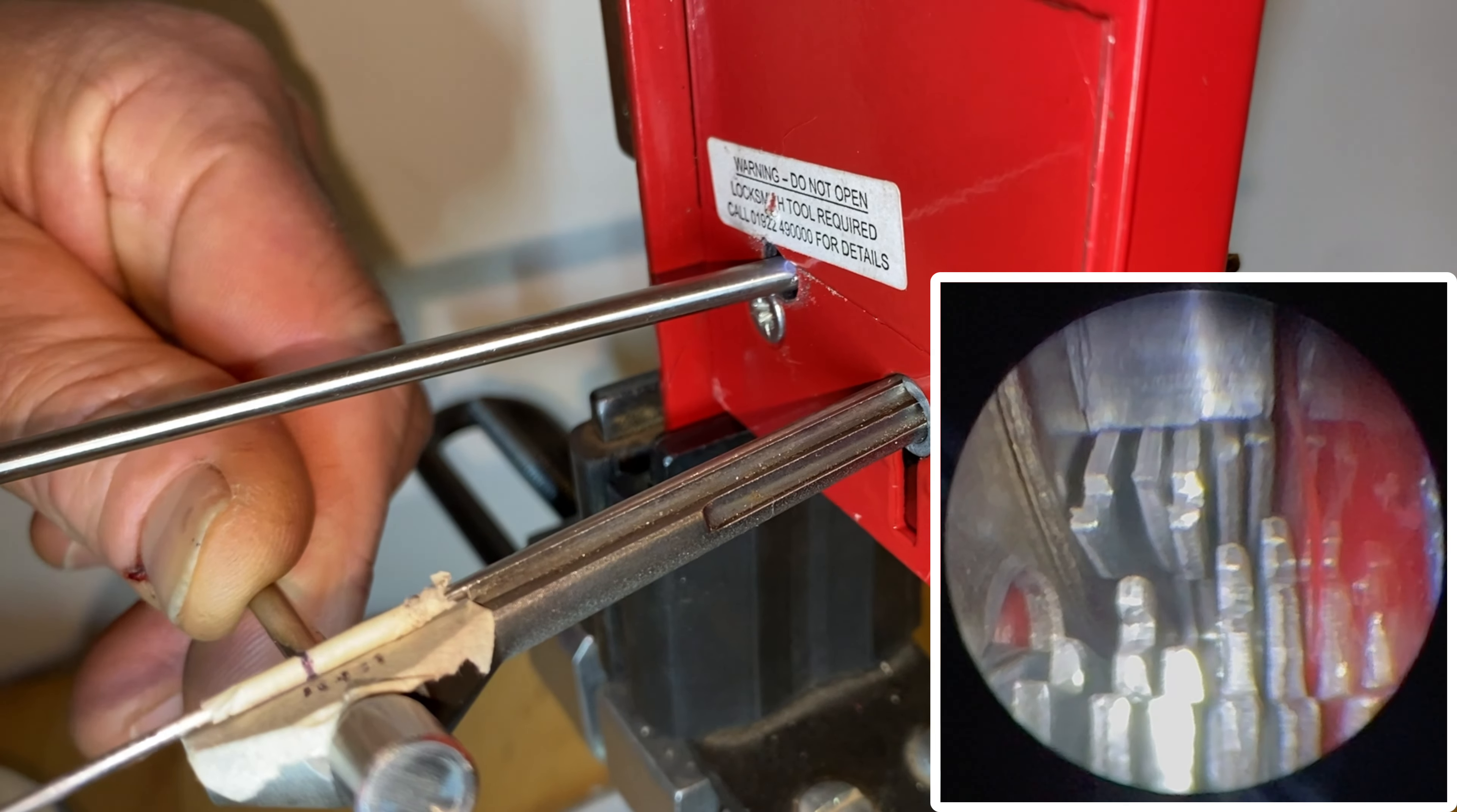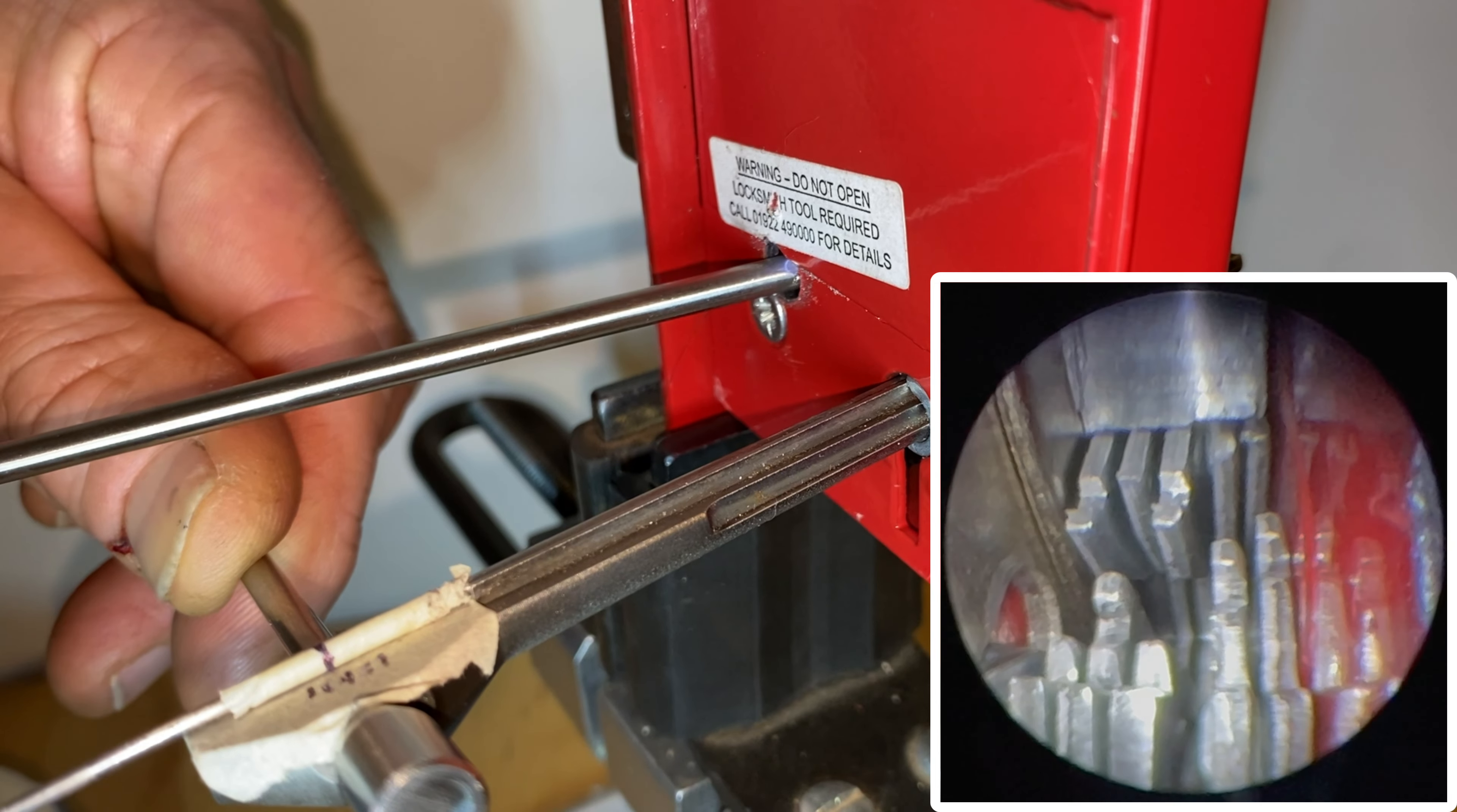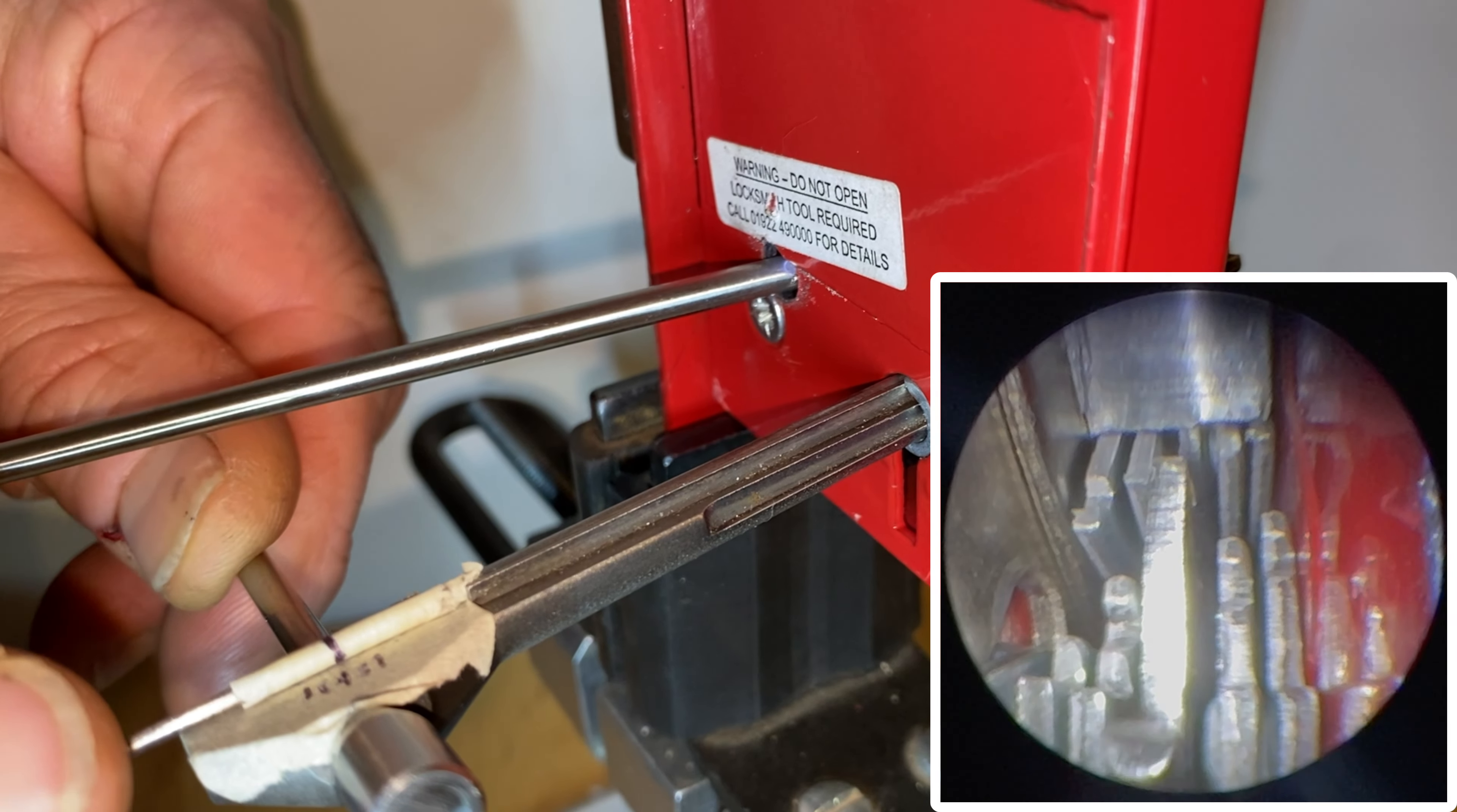And if we go to, say, for example, lever three—let me just get the pick underneath the right lever here—lever three is partially binding, but it's not really staying up there.